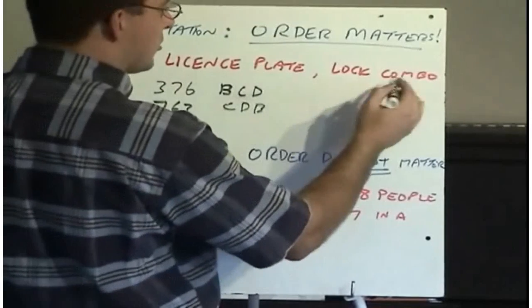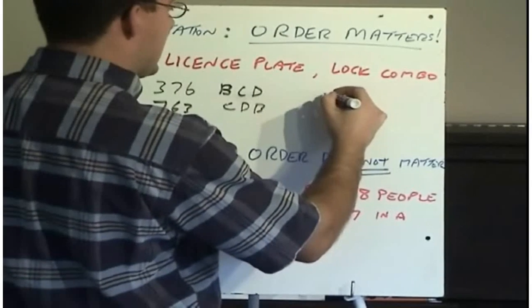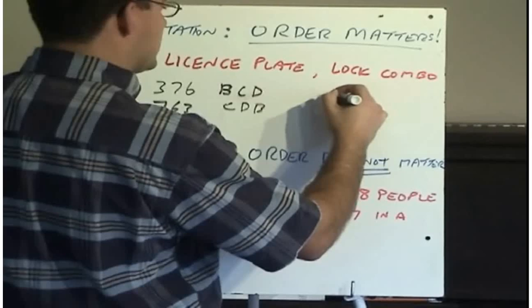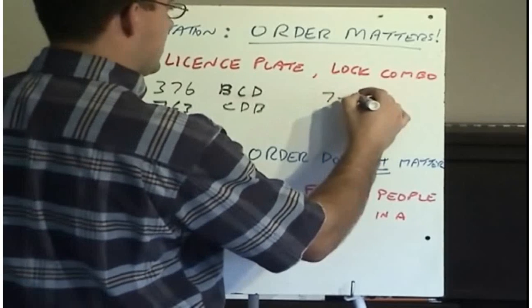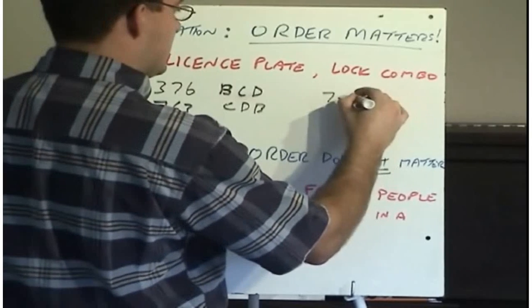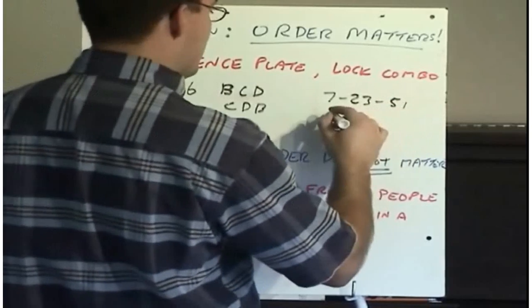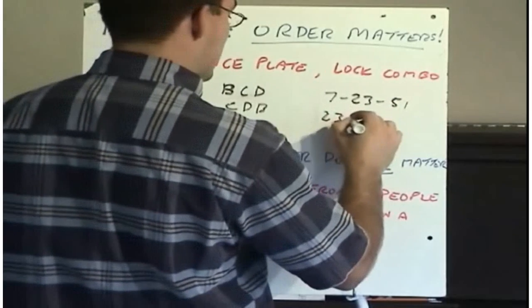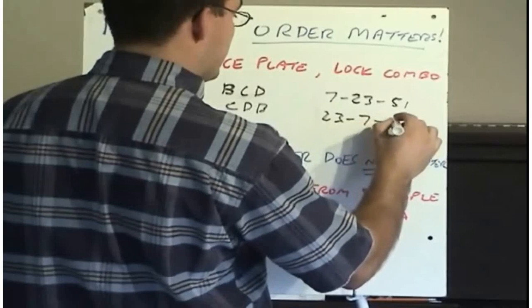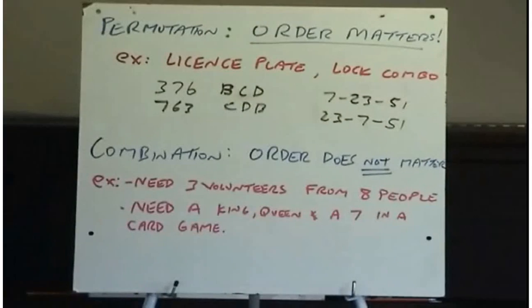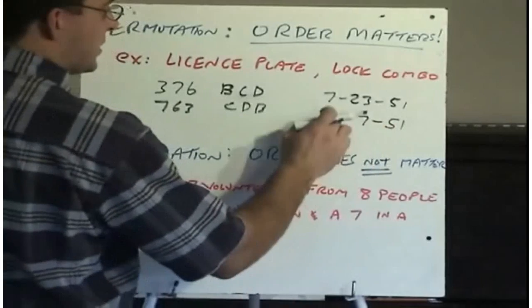Another example would be your locker combination. So if your locker combo was 7, 23, 51, and mine was 23, 7, 51, we have different locker combos, even though we have the same three numbers.